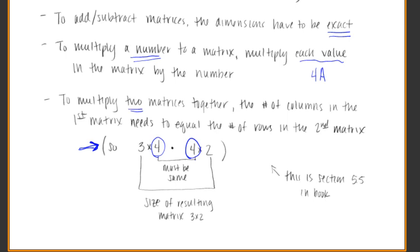So as long as those two match up, almost consider taking those away. And then the resulting size of the matrix, the answer that you're going to get by the time you multiply those together, is in this case going to be a 3 by 2. The outside, the two outside numbers, is going to be the size of the resulting matrix. So if you take a 3 by 4 and you multiply it by a 4 by 2, then the answer is going to be a matrix that has 3 rows and 2 columns.